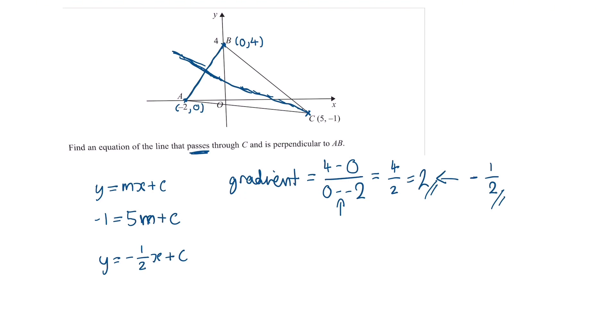Now to find c all we need to do is just use this equation up here. So we replace m with minus a half. So we have minus 1 is equal to 5 times minus a half plus c. So if we just add this to the other side we're going to get minus 1 plus 5 over 2 is equal to c. So c is just equal to 3 over 2.